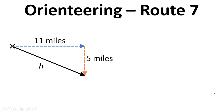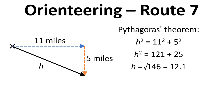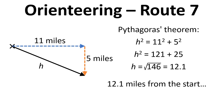We're going to focus on this triangle. To get the distance we can use Pythagoras: h squared equals 11 squared plus 5 squared, and we can work that out to give us 12.1 miles from the start.